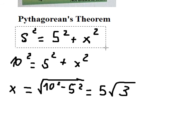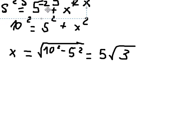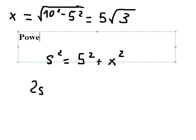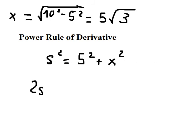And now we use this equation in here and then we differentiate both sides. This one, we have 2s. We just applied the power rule of the derivative, and then we have ds over dt.